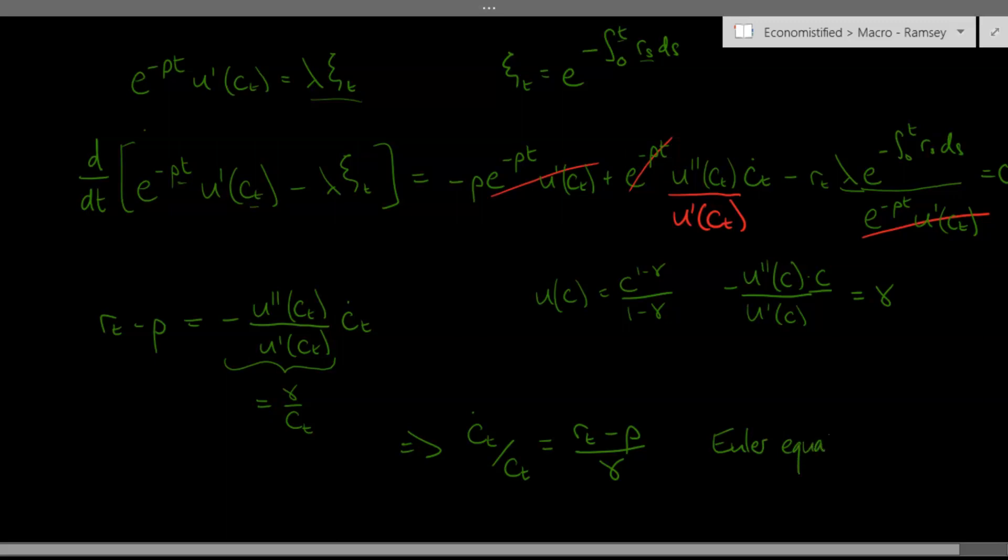Which you've probably seen before, but I've just derived it in a slightly different way. We're not done yet. We can use this Euler equation to derive the policy function, the consumption, and I'll do that in the next video. Thank you very much. See you then.